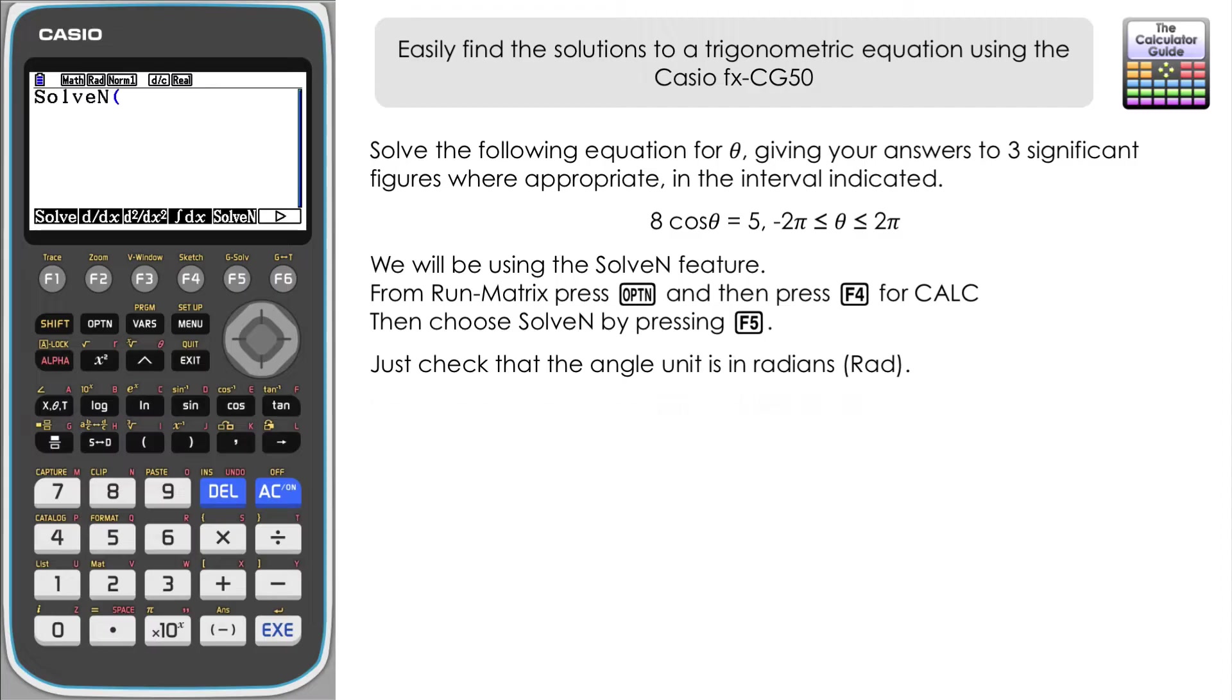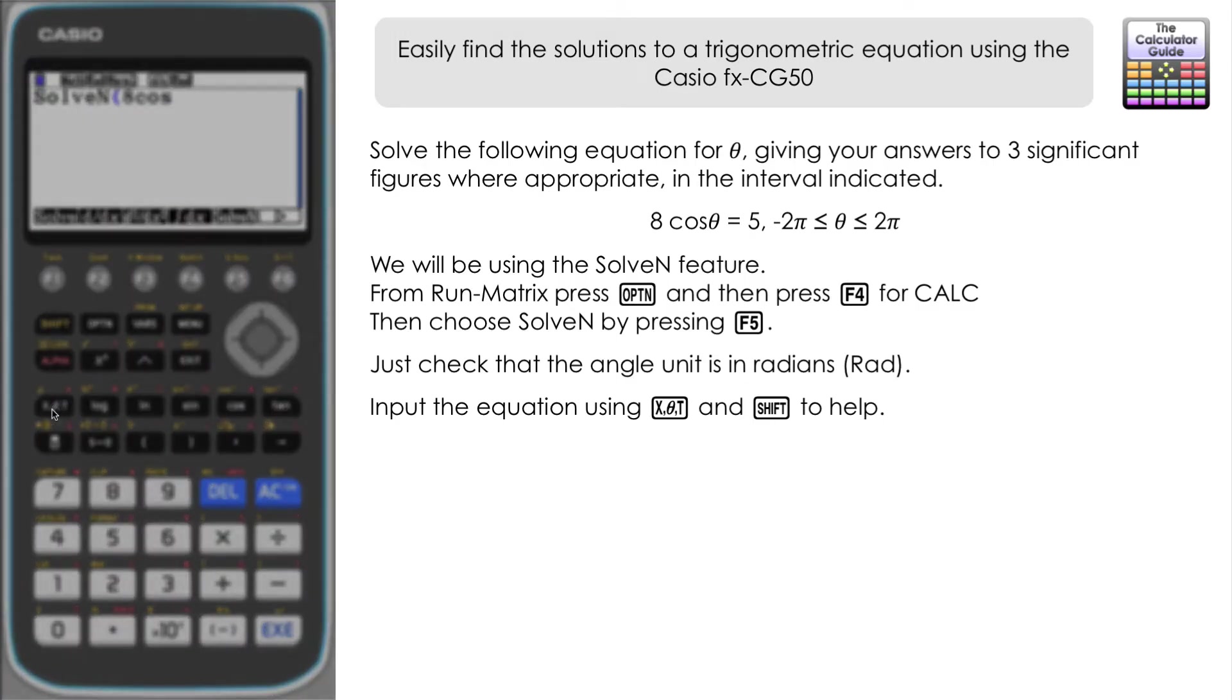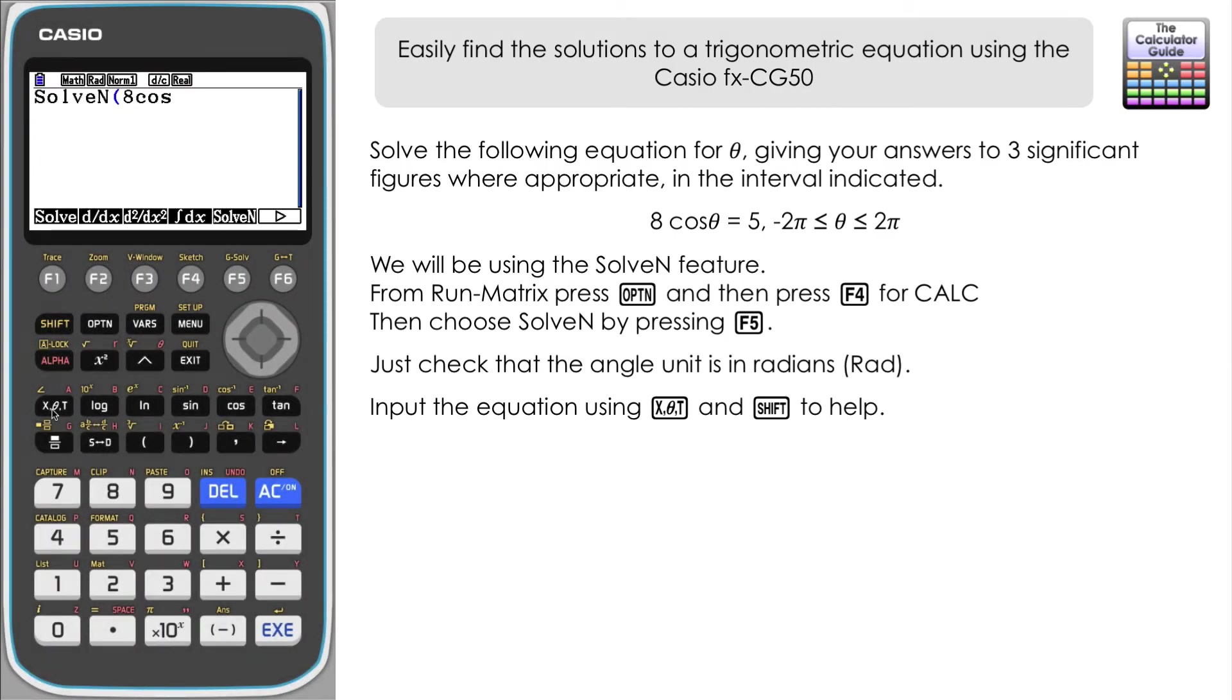Now the first thing we want to do is to input our equation. So it's going to be 8 cosine. Now I'm going to use the x θ T button over here. Now because we've reset, that's going to give us an x here instead of theta as written in the question. Don't worry about that too much. Our solutions for x are going to be the same as what would be the solutions for theta, so we're just going to substitute x for theta in this case. We're still going to get all the answers that we want.